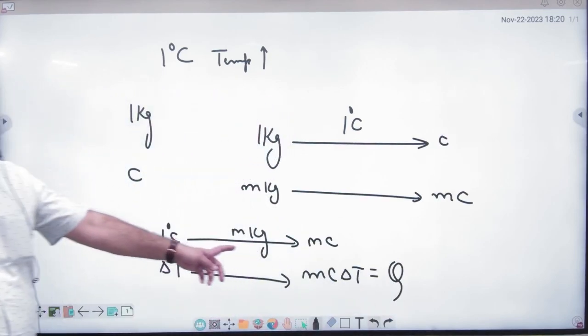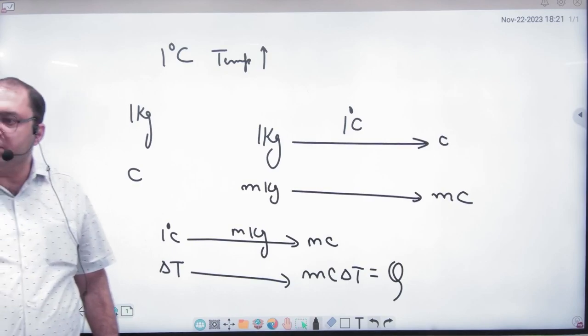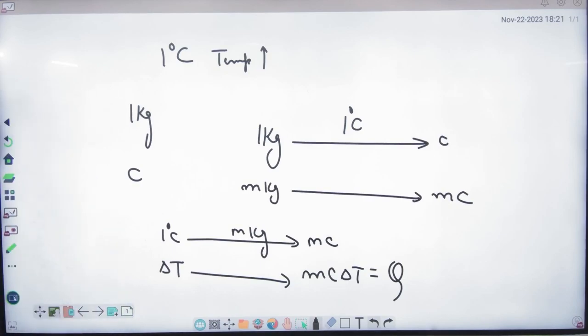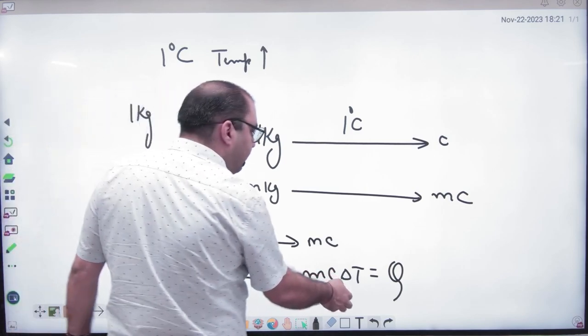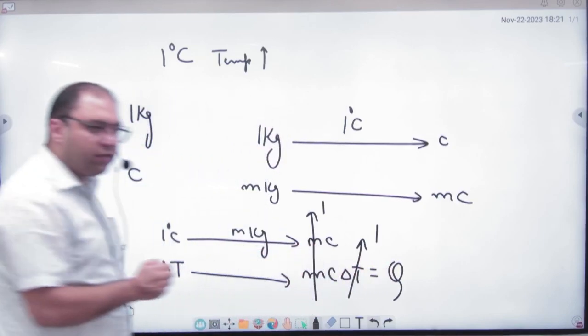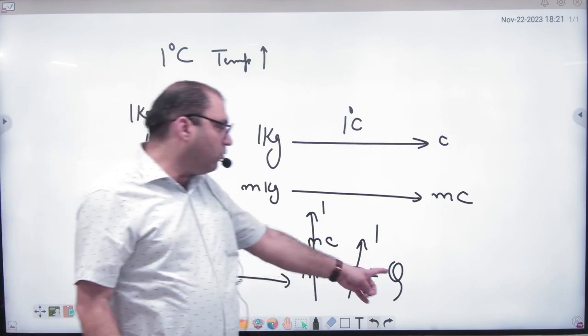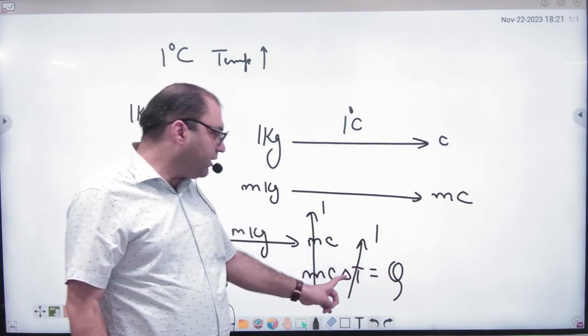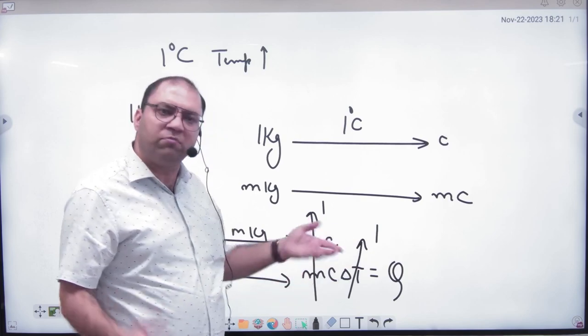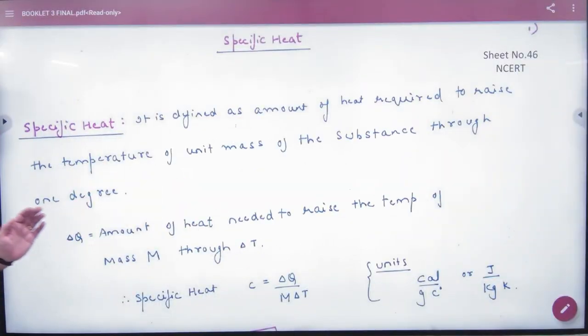This formula you already know: Q equals M C delta T. So basically, if rise in temperature is 1 and mass is 1, amount of heat is specific heat. Here is the definition: it is the amount of heat required to raise the temperature of a unit mass of substance through 1 degree celsius.